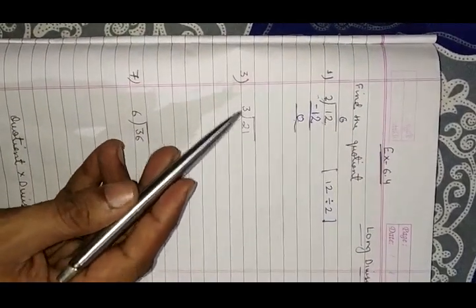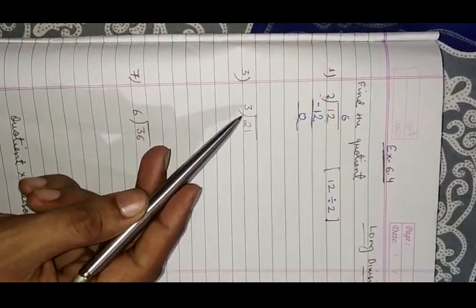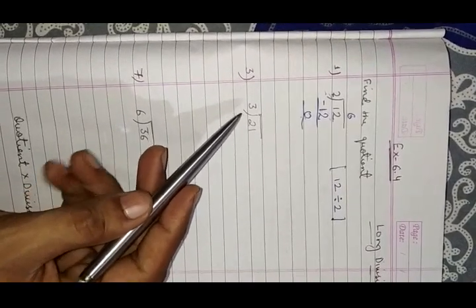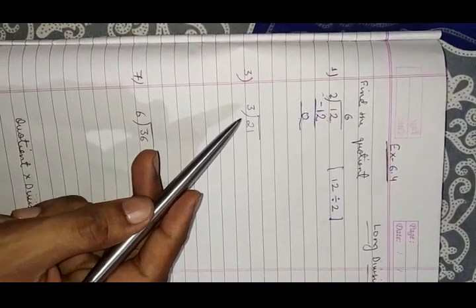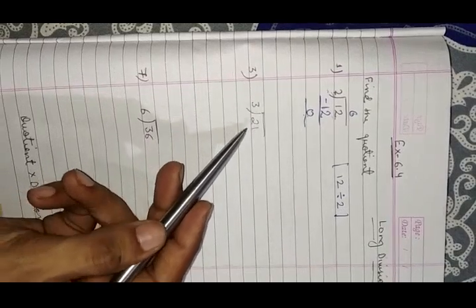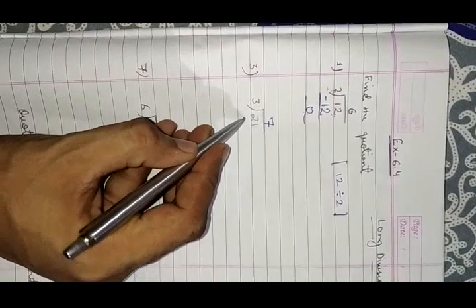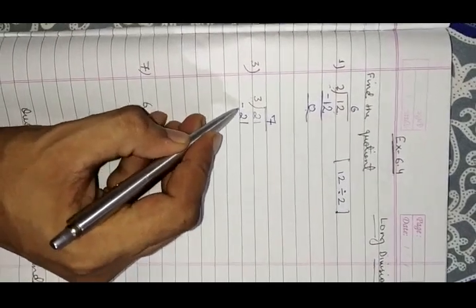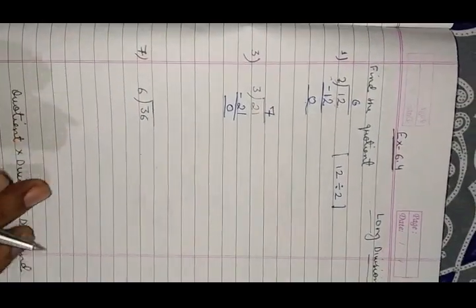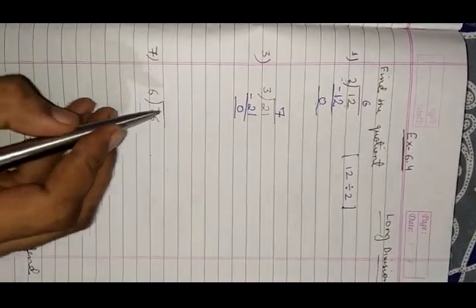Third question: 21 divided by 3. Count how many times 3 makes 21. 3 sevens are 21, so the quotient will be 7. 3 sevens are 21, and 21 minus 21 equals 0.